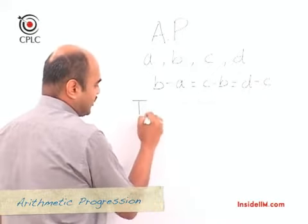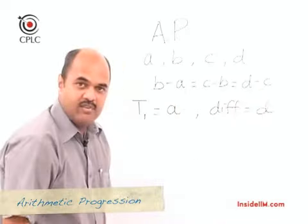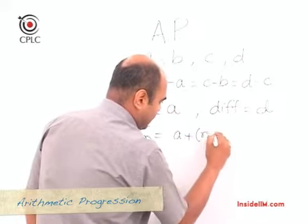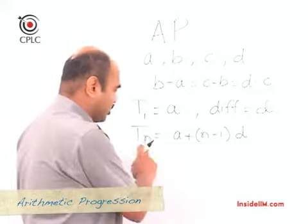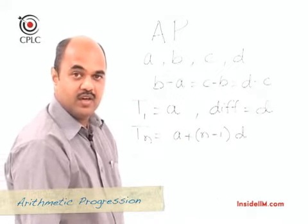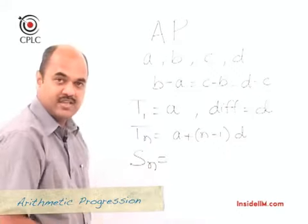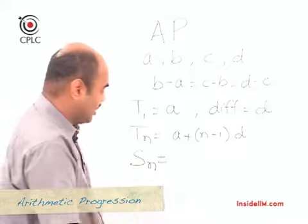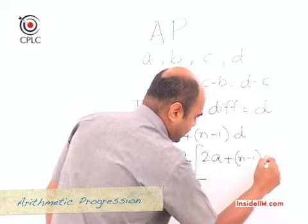If we denote our first term as A and the common difference as D, then we have a formula for the nth term in an arithmetic progression, given as A plus (N minus 1) into D. So if we want to find the value of any nth term given the first term and the common difference, we use this formula. We also have a formula for SN, the sum of the first n terms, which is n upon 2 multiplied by 2A plus (N minus 1) into D.